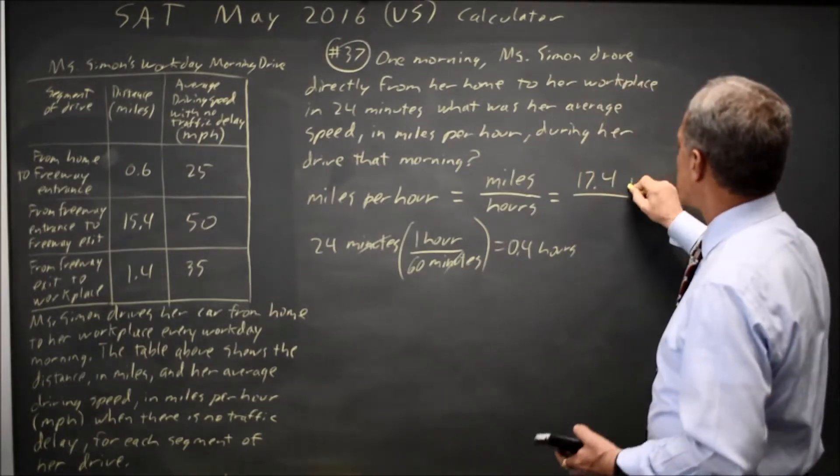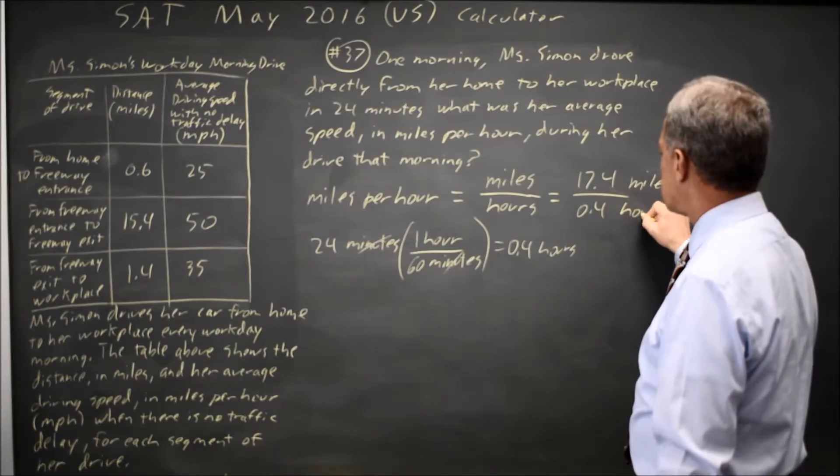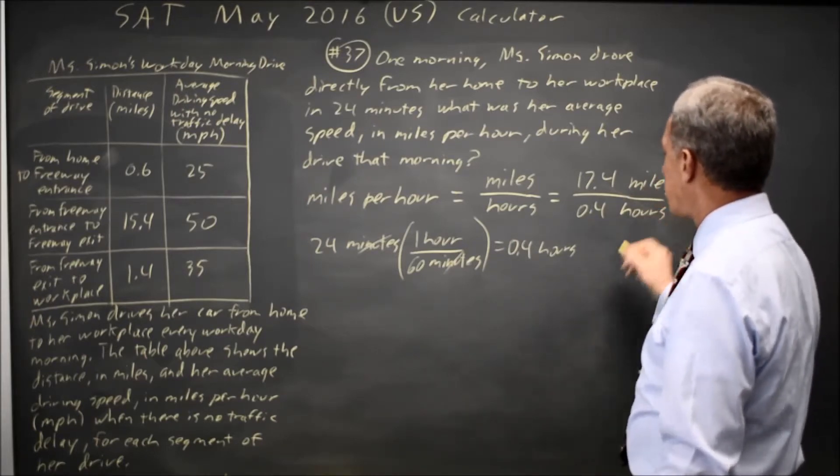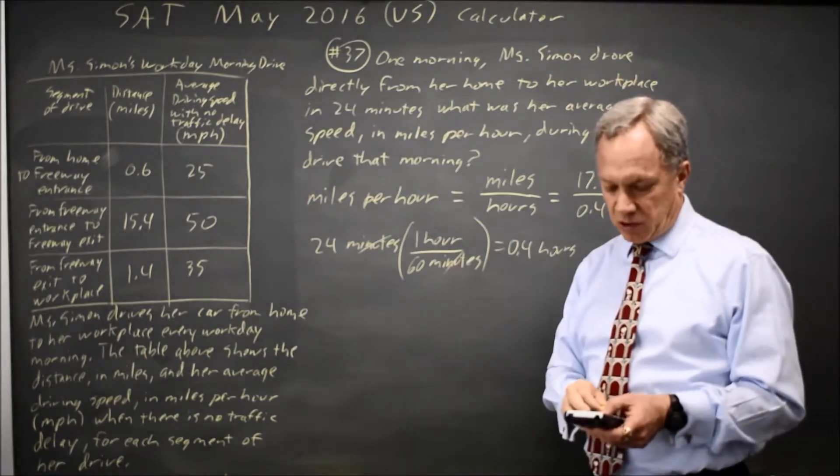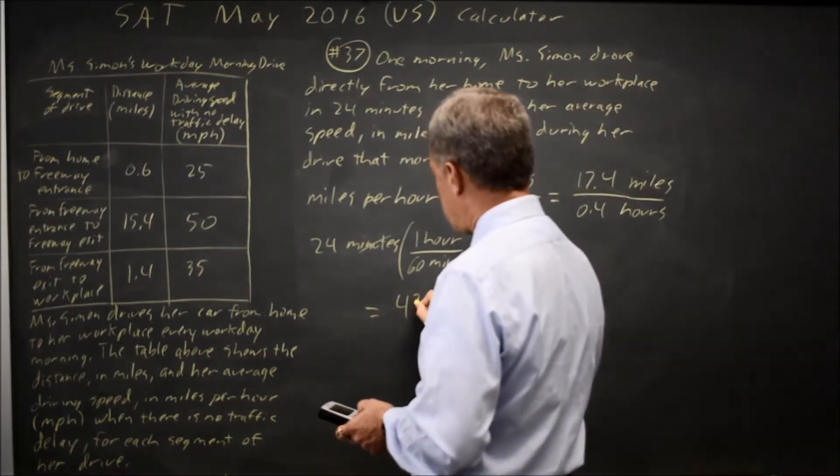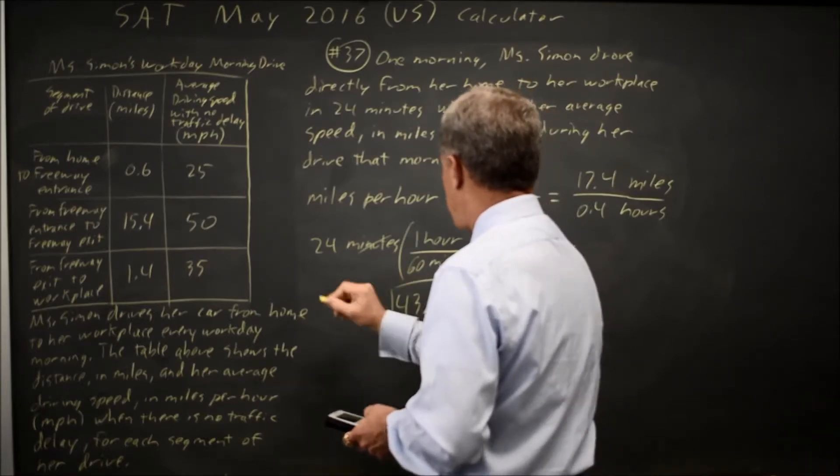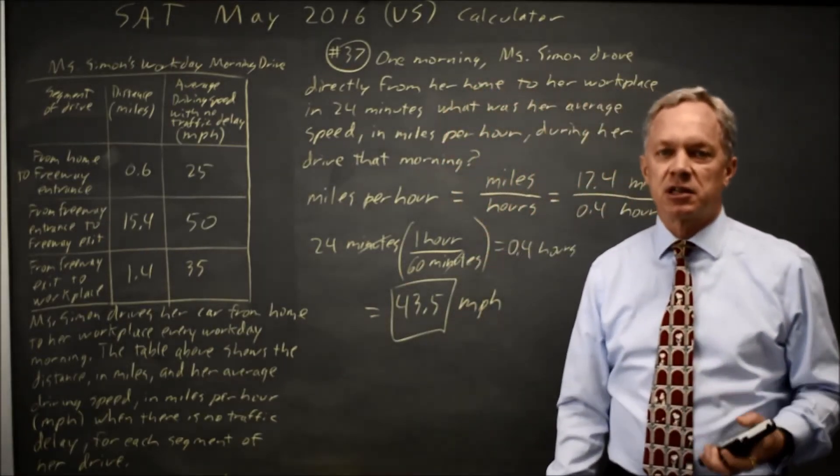So 17.4 miles divided by 0.4 hours should give me miles per hour, and 17.4 over 0.4 is 43.5 miles per hour, and 43.5 is the answer that they're looking for.